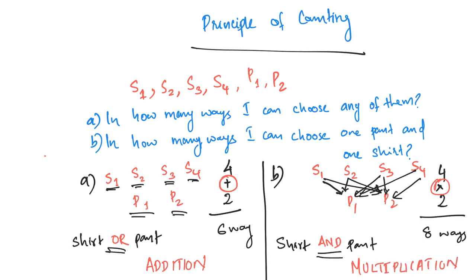Let's apply this concept. Instead of 4 shirts, I have 10 shirts. Instead of 2 pants, I have 20 pants. I need to choose 1 shirt and 1 pant. With 1 shirt I have 20 options, so with 10 shirts I have 10 into 20 options, which equals 200. If you know that OR is for addition and AND is for multiplication, you can do most questions in permutations and combinations.